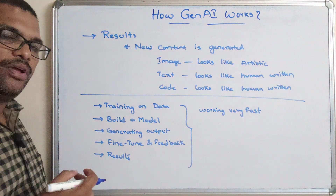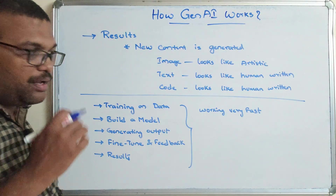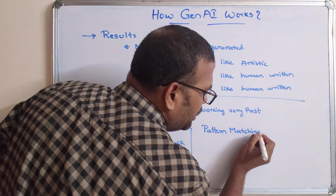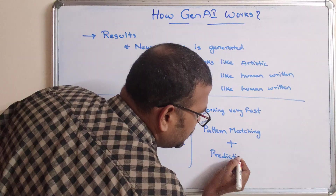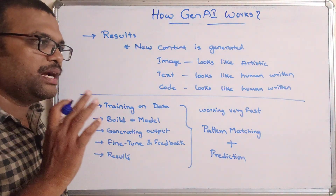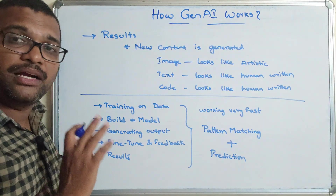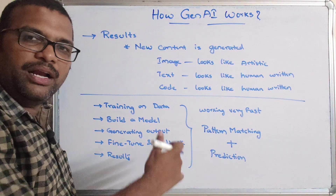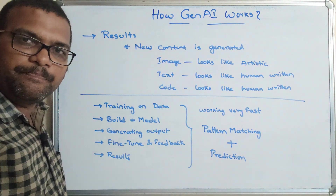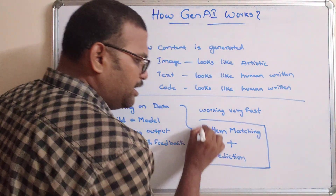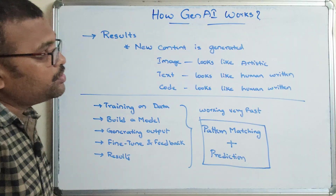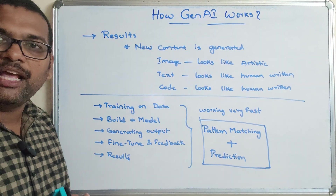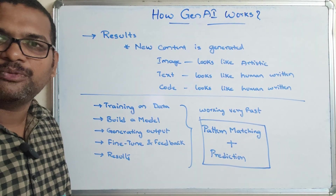All these five steps — training on data, build a model, generating output, fine-tune and feedback, and results — work very fast. We think the AI is thinking, but actually two things happen: pattern matching and prediction. It doesn't copy content from memory; it identifies patterns and predicts the next output. That is how generative AI works. Hope you understood — if you enjoyed the session, like, share, and subscribe. Thanks for watching!